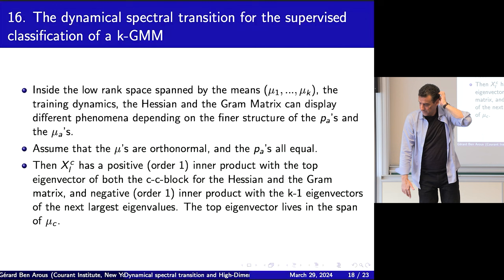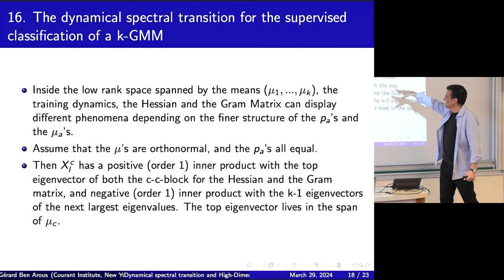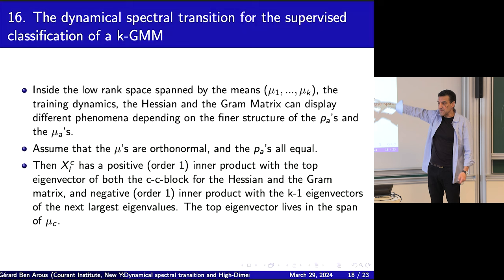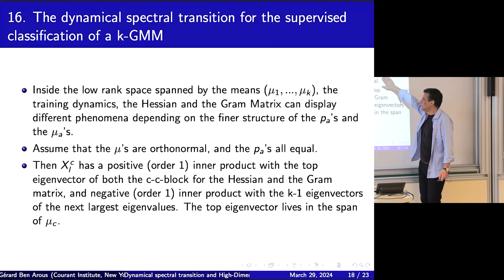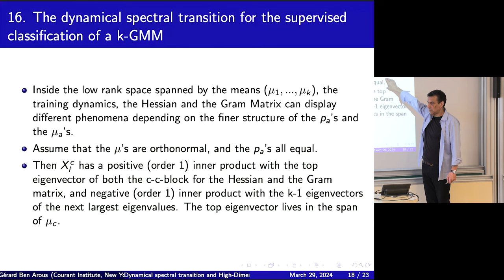In this particular simple case (orthonormal mu's, equal p's), the projected dynamical system is simple — no crazy stuff happening. There's plenty of room to study more complicated cases. When the mu's are not orthonormal, say two classes are very close, it becomes difficult to distinguish them — similar to tensor PCA with two very close spikes.